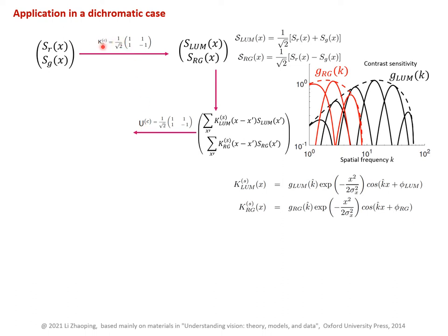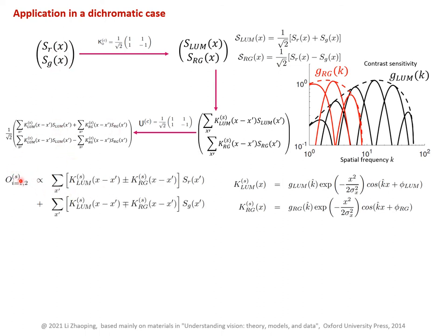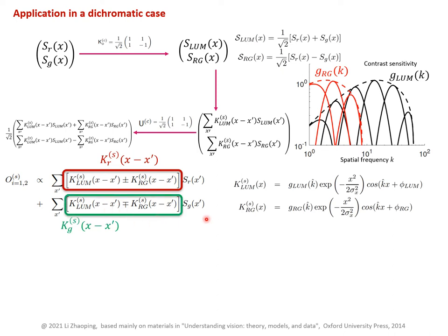Now we can multiplex these two channels in the cone dimensions using the inverse of the transform. We get these outputs as the summation or difference of the two signals. Writing these in terms of the original red and green images, the output for the first or second output node follows equations as a function of the red input and green input. Therefore, these are the receptive filter for the red input and for the green input, and we see how these filters depend on the luminance filter and chromatic filter.